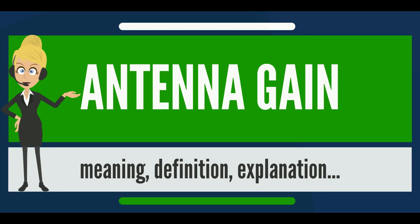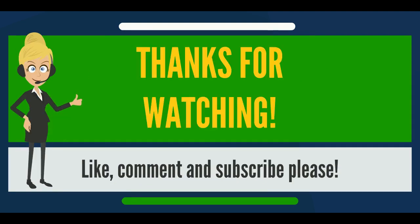Directive gain or directivity is a different measure which does not take an antenna's electrical efficiency into account. This term is sometimes more relevant in the case of a receiving antenna, where one is concerned mainly with the ability of an antenna to receive signals from one direction while rejecting interfering signals coming from a different direction.